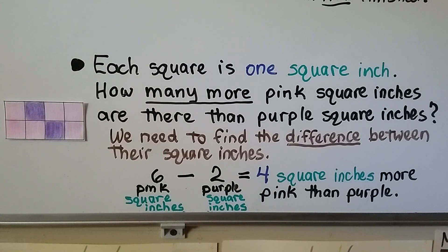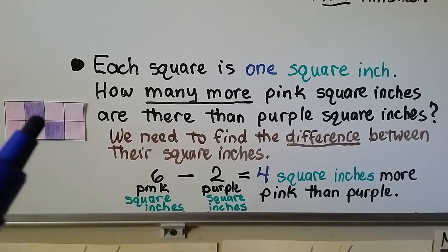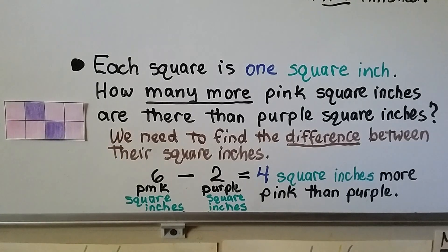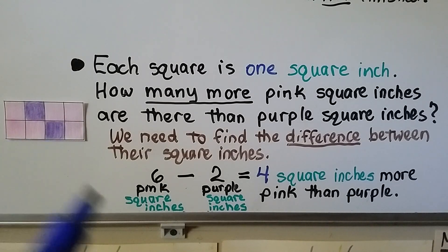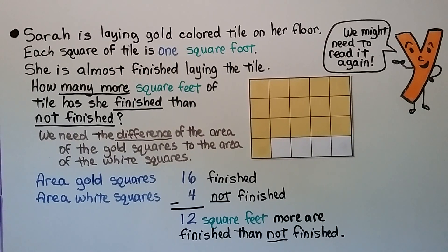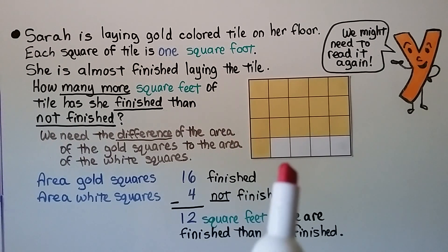Be very careful when reading these word problems. It doesn't want you to add eight and two — it wants to know how many more pink there are than purple. So we take the total of pink, the total of purple, and then do the subtraction. That's what made the gold-and-white problem tricky too: we needed to find how many more gold ones there were than white ones.